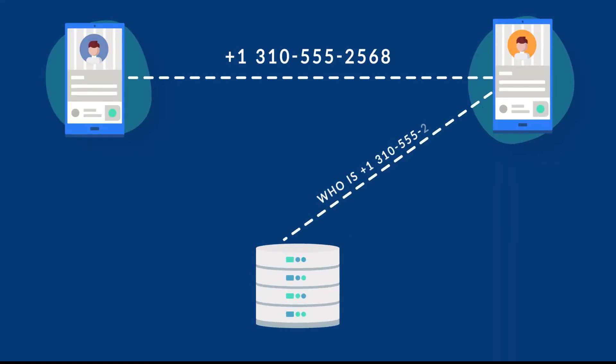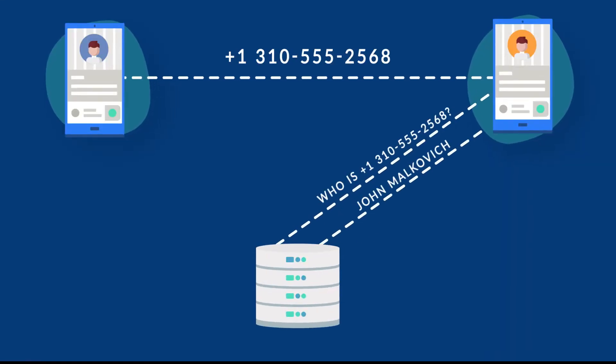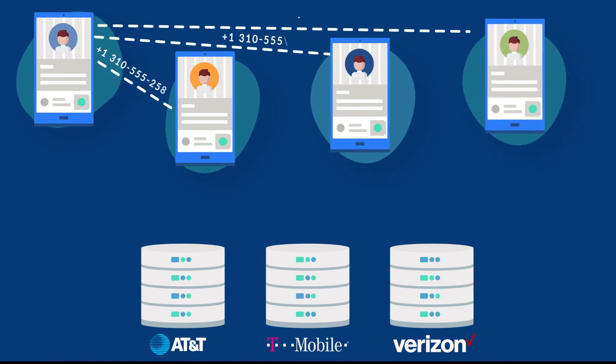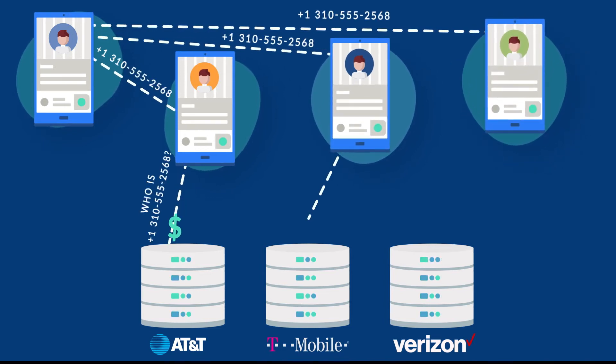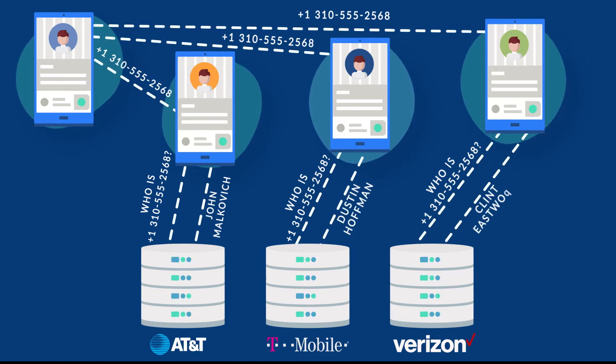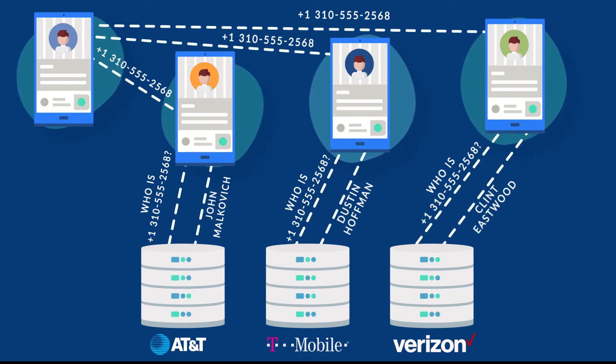Because it's up to the receiving provider to look up the caller ID information for each call, and because they are charged for each dip into the CNAM database, carriers often store that info for several weeks. This way they don't have to dip and pay to retrieve the CNAM for every single call. The downside is that even if you update CNAM for your phone number, it may not show up correctly to everyone right away. How current your caller ID info is ultimately depends on the carrier of the person you're calling.